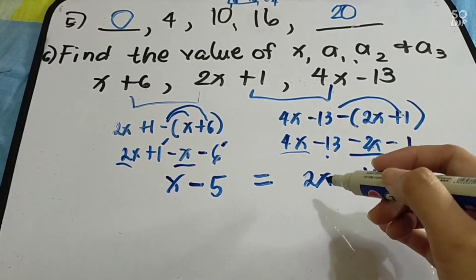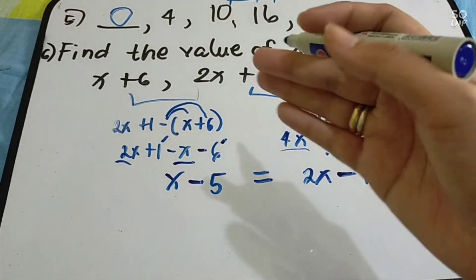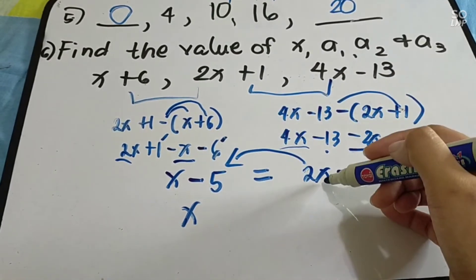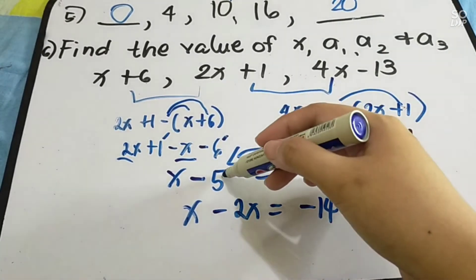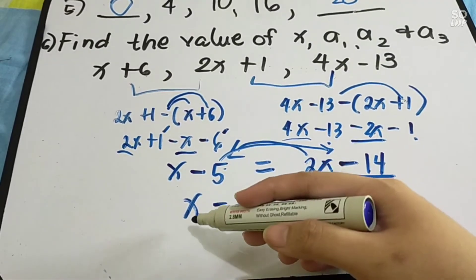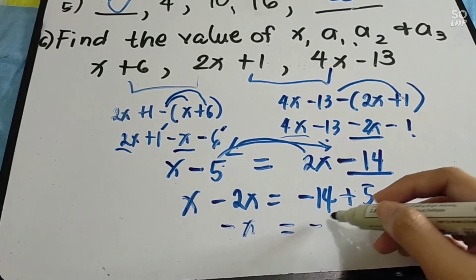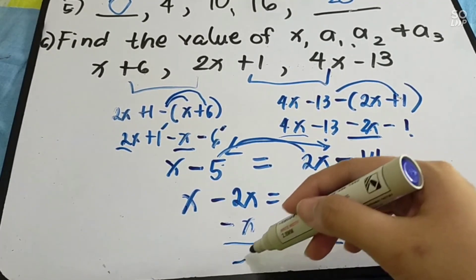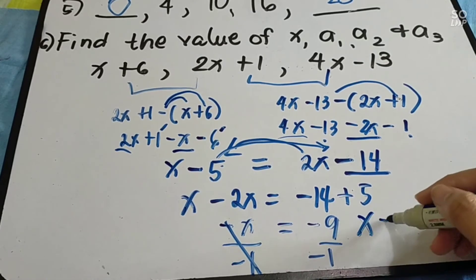Transpose: move all x terms to the left and constants to the right. x minus 2x equals negative 14 plus 5, giving negative x equals negative 9. Divide both sides by negative 1: x equals positive 9.